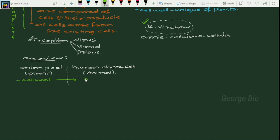So what is the outermost covering, or the delimiting structure, in the human cheek cell or animal cell? That is plasma membrane. The delimiting structure in animal cell is plasma membrane.